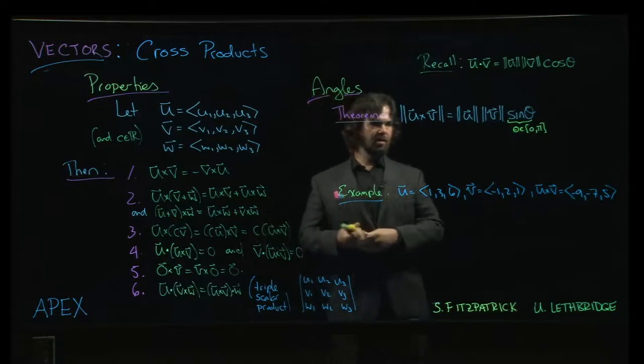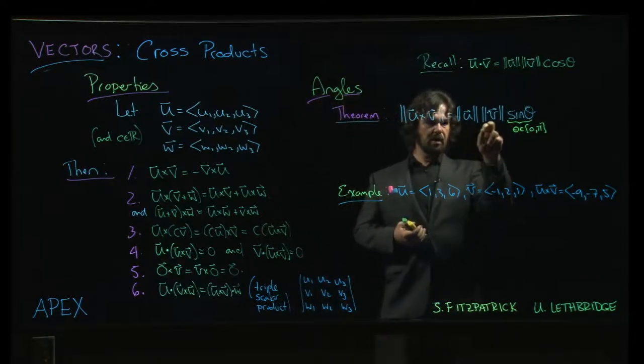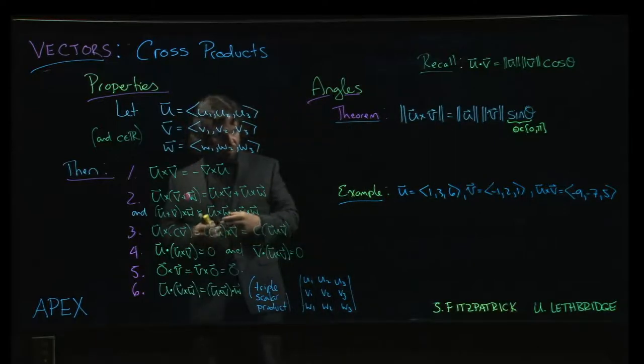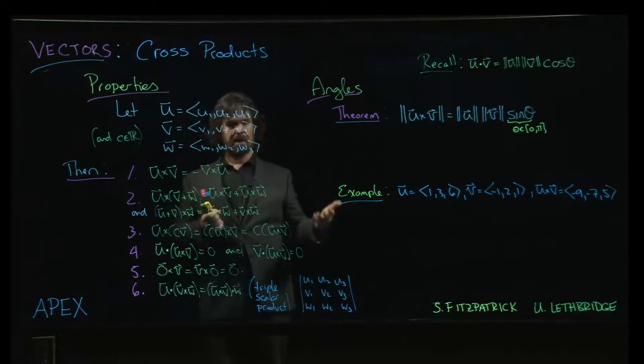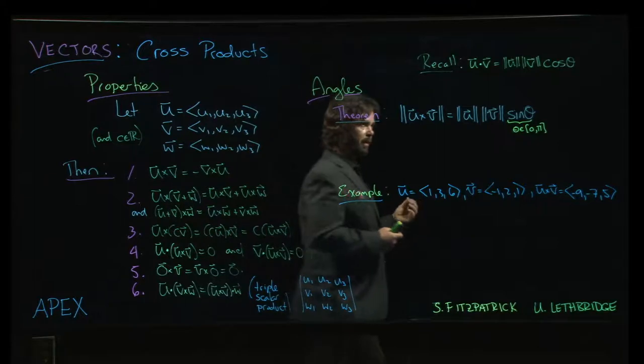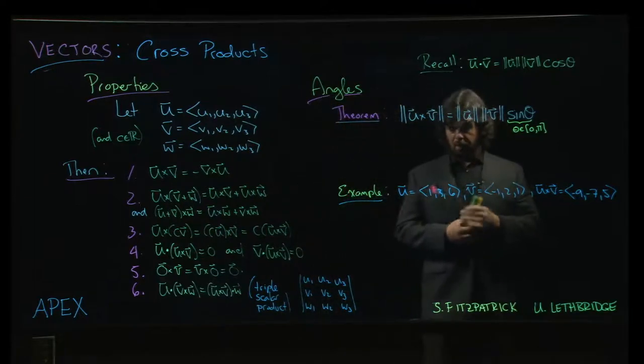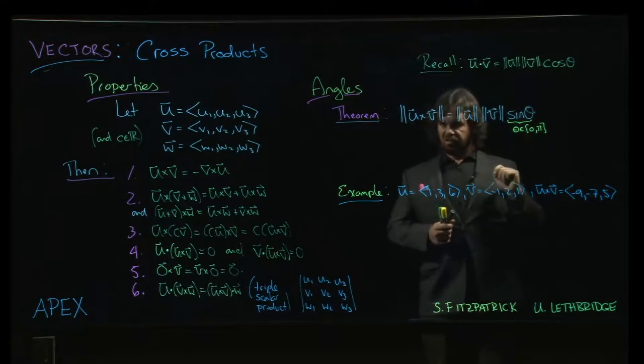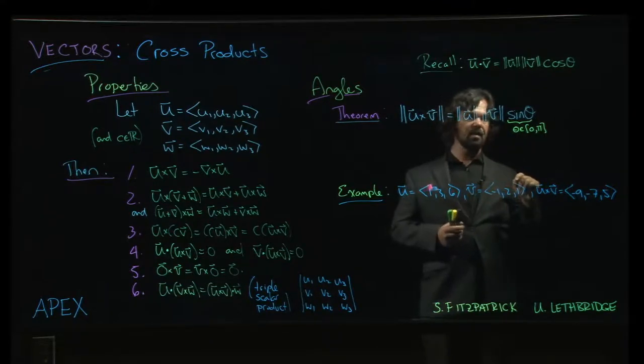And then on the other side, you're going to do the magnitude of u squared times the magnitude of v squared. There's a fair amount of work to do to play around and get things to simplify. But actually, one of the things that is going to pop out when you do it, you're going to see this show up. You're going to see it show up.